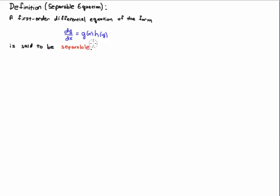Alright, so here's the definition, and what you'll notice is that we have a product of two functions, g of x and h of y.